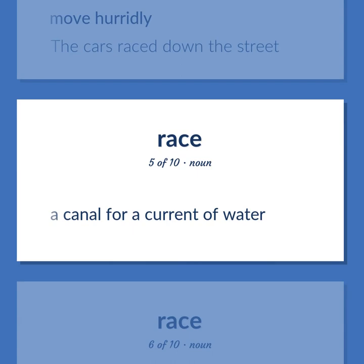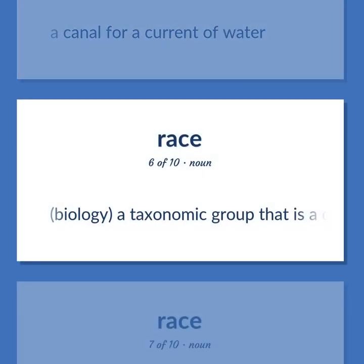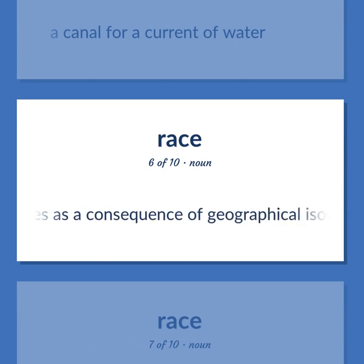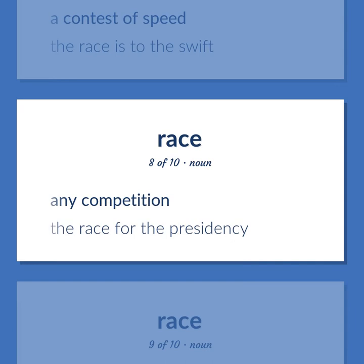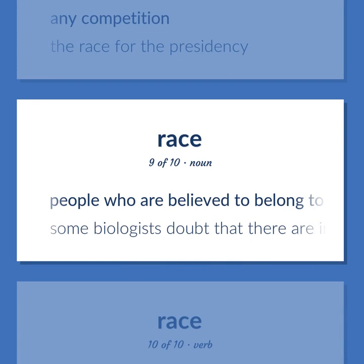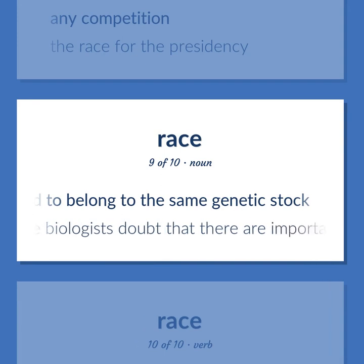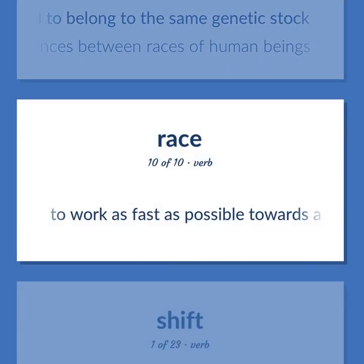A canal for a current of water. Biology: a taxonomic group that is a division of a species, usually arising as a consequence of geographical isolation within a species. A contest of speed — the race as to the swift. Any competition — the race for the presidency. People who are believed to belong to the same genetic stock. Some biologists doubt that there are important genetic differences between races of human beings. To work as fast as possible towards a goal, sometimes in competition with others.